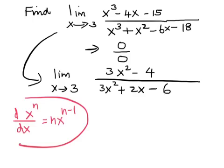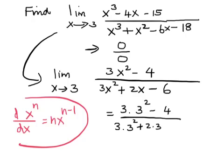Now when we try to plug 3 in this rational expression, what we see is 3 times 3 squared minus 4 divided by 3 times 3 squared plus 2 times 3 minus 6, and that would simplify to 23 divided by 27.